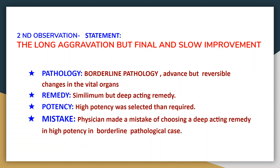We proceed to the second observation. The statement is: long aggravation, but final and slow improvement of the patient. In which conditions will you see such aggravation? When the pathology is of borderline type — that is, advanced but with reversible changes in vital organs, not yet gone to the extent of irreversibility. The remedy selected is similimum but again a deep-acting remedy, and the potency selected was higher than required. The mistake of the physician: choosing a deep-acting remedy in high potency in borderline pathological cases.